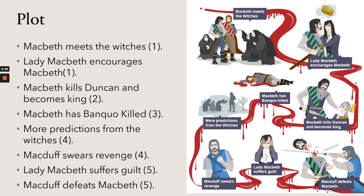In Act One, Macbeth meets the witches and Lady Macbeth encourages Macbeth to kill the king after he receives the prophecies that he will be king. In Act Two, Macbeth kills Duncan and becomes king. In Act Three, Macbeth has Banquo killed.